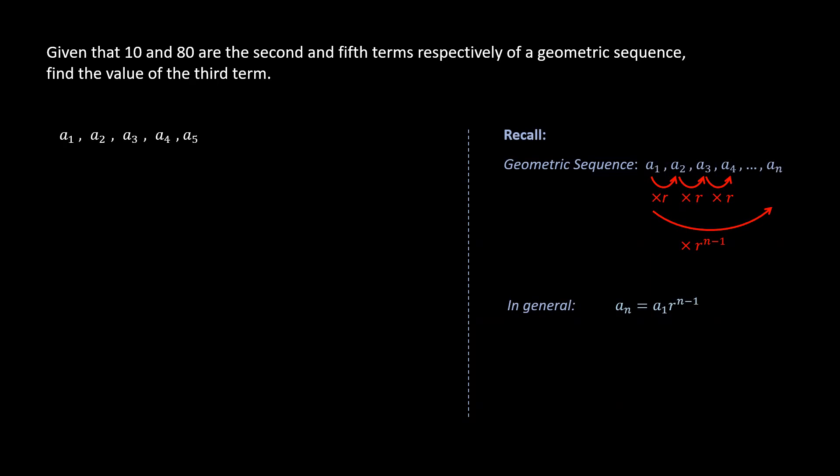Suppose a1 to a5 are the five terms of the given sequence for the problem. Now we know that a2 or the second term is 10 and the fifth term is 80, so we substitute. To find a3 or the third term, we can multiply the second term or 10 by r or the common ratio.